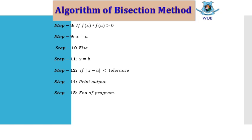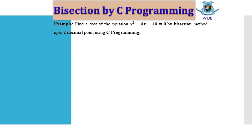Okay, there is an example for you. Find the root of the equation x² - 4x - 10 = 0 by using bisection method up to two decimal points. You must do this program using C programming.